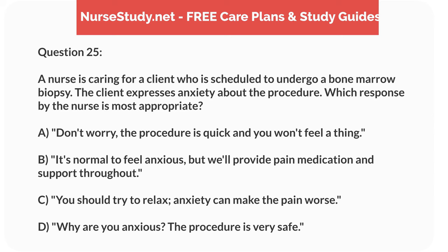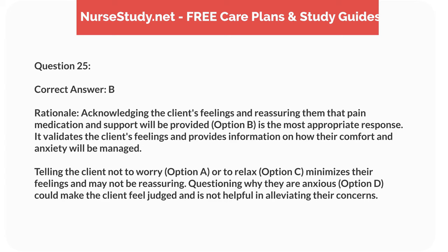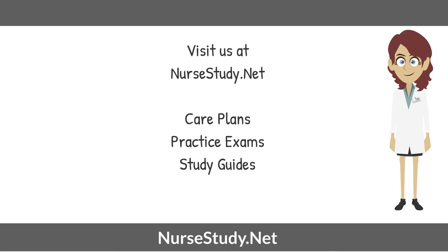Correct answer: B. Rationale: acknowledging the client's feelings and reassuring them that pain medication and support will be provided, option B, is the most appropriate response. It validates the client's feelings and provides information on how their comfort and anxiety will be managed. Telling the client not to worry, option A, or to relax, option C, minimizes their feelings and may not be reassuring. Questioning why they are anxious, option D, could make the client feel judged and is not helpful in alleviating their concerns. Visit nursestudy.net for more nursing practice exams, care plans, and study guides.